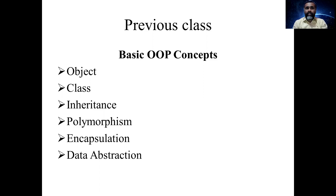Polymorphism is a Greek word meaning 'many forms.' There are two types of polymorphism: compile-time polymorphism, which is method overloading, and runtime polymorphism, which is method overriding. We saw examples for both of these.